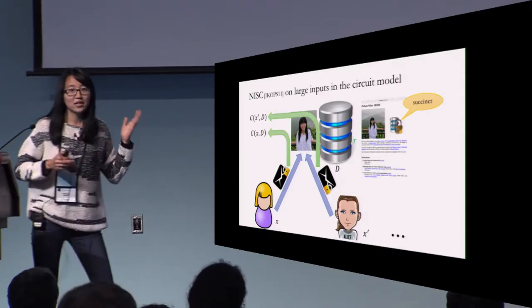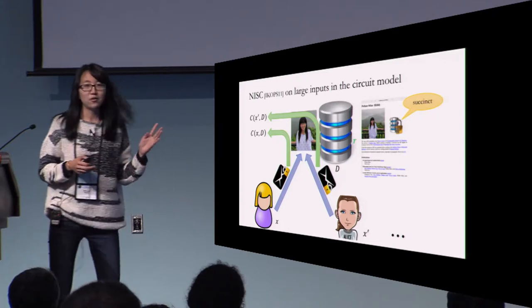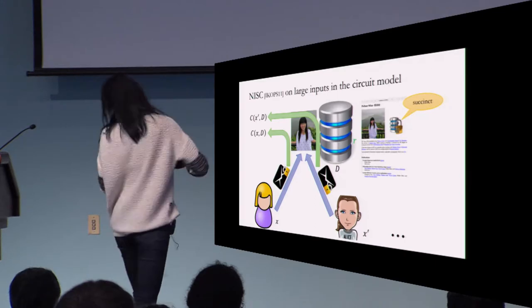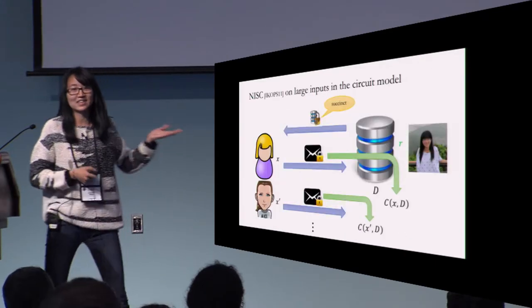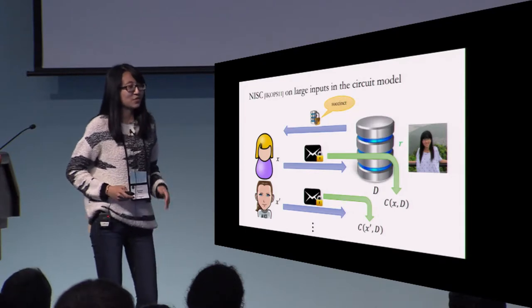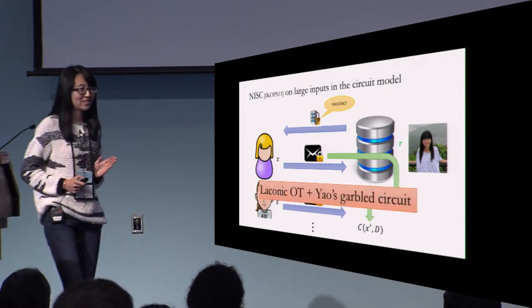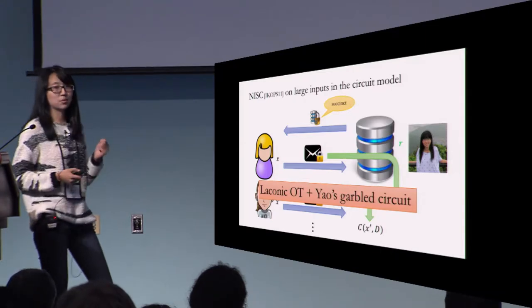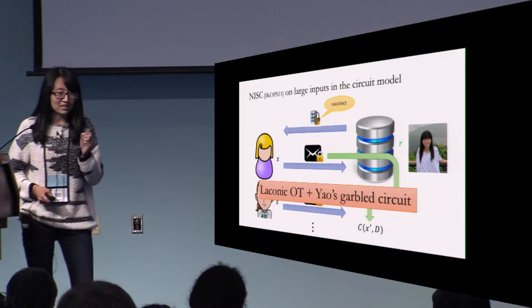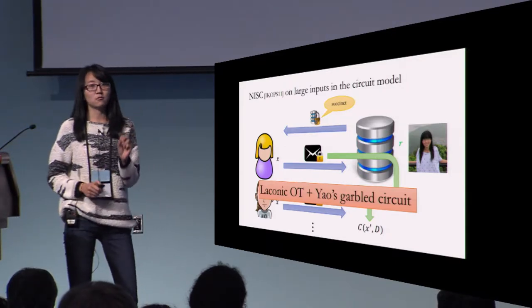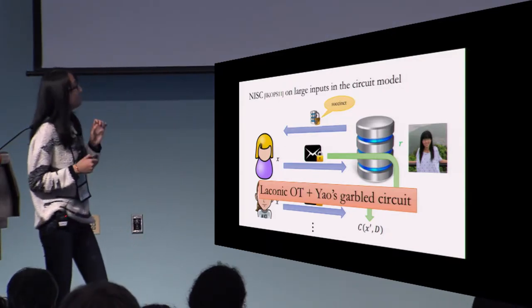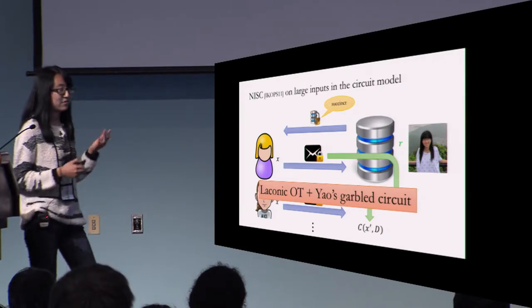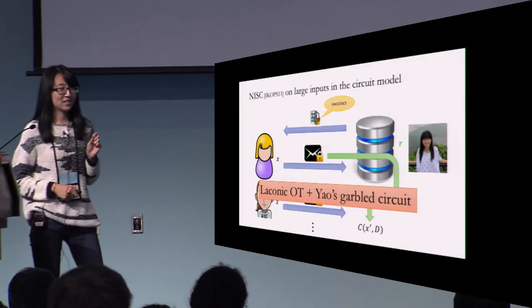If you look at this picture, it looks very similar to the definition of laconic OT — this is exactly what laconic OT is doing. So we can construct this application from laconic OT, plus a primitive called Yao's Garbled Circuit. I want to stress here that we don't even know how to do this via the strong primitive fully homomorphic encryption FHE, even though it is a very straightforward application of laconic OT. Let's see how it works.